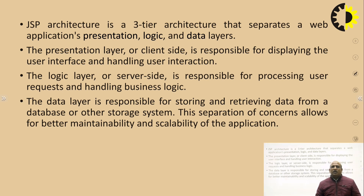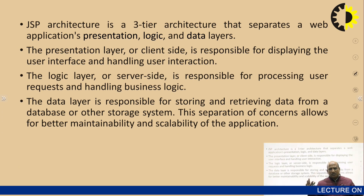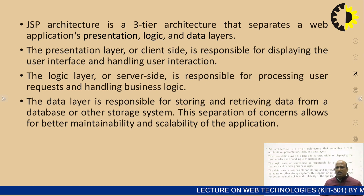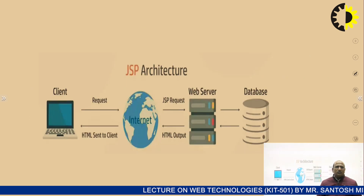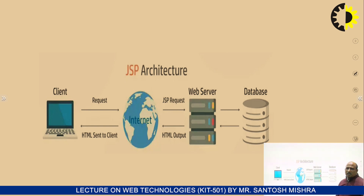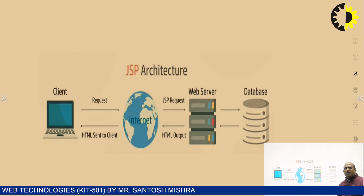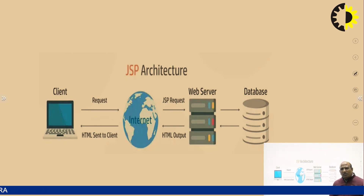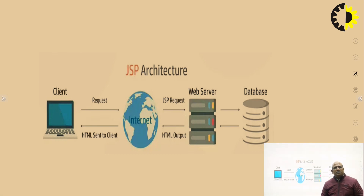JSP provides the mechanism to separate Model, View, and Controller. The model is the backend/database part, the controller handles business logic and actual program processing, and the view is the presentation logic that interacts with the client. The client sends a request via the internet to the web server for a JSP page. The web server fetches data from the database if required, processes the request, generates a dynamic HTML response, and sends it back to the client via the internet.